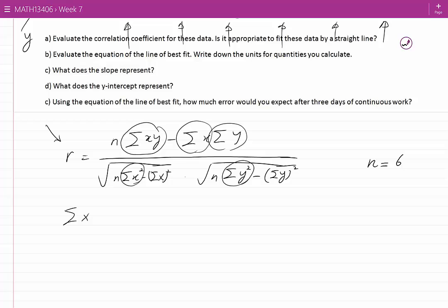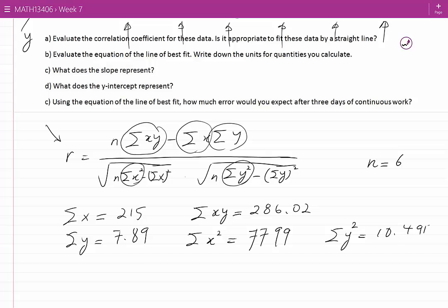Sum of the x values is 215. Sum of the y values is 7.89. Sum of the xy is 286.02. Sum of the x squared values would be 7,799 and sum of the y squared values would be 10.4917.